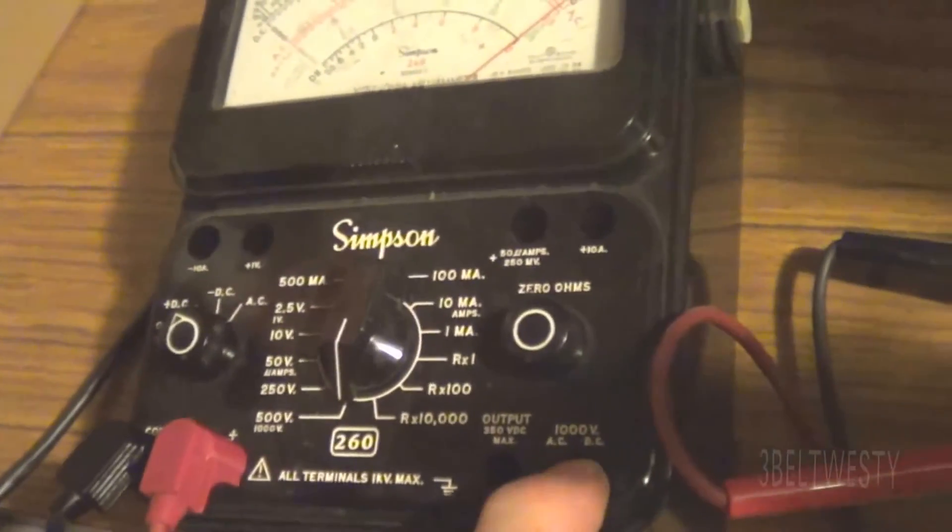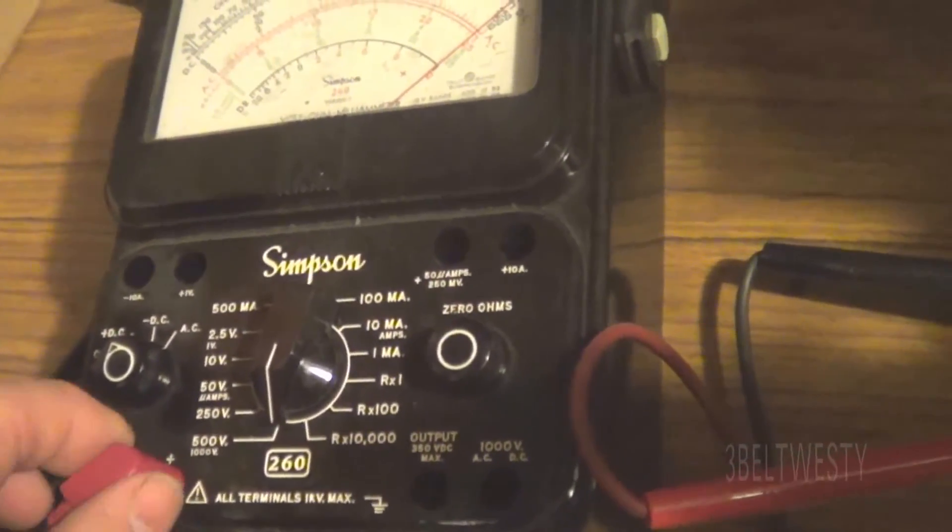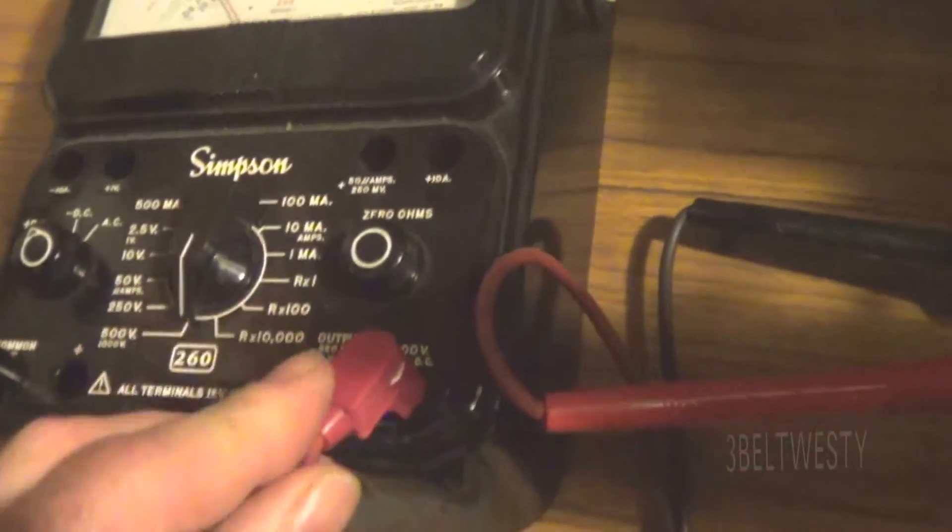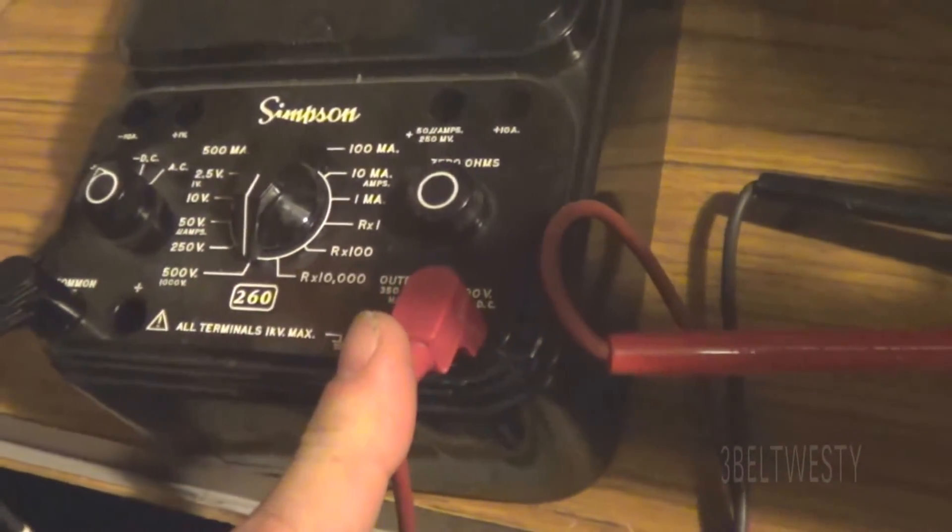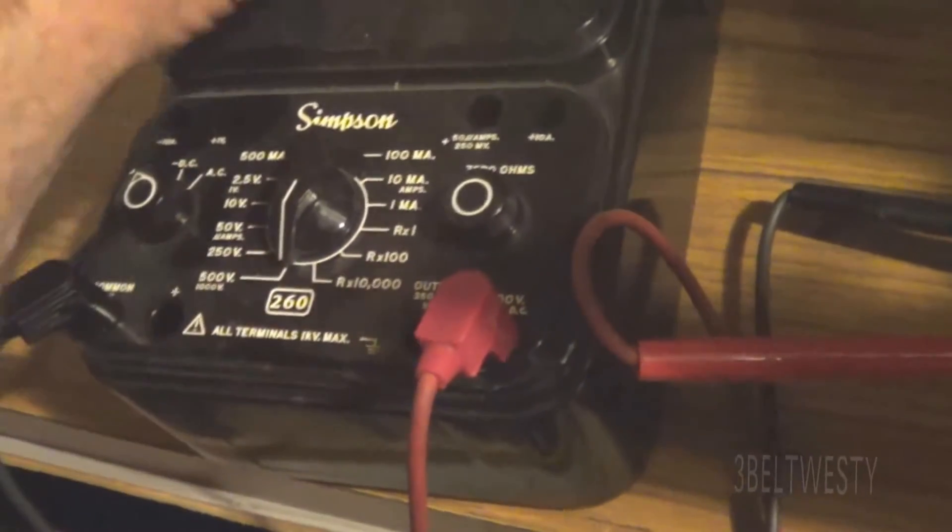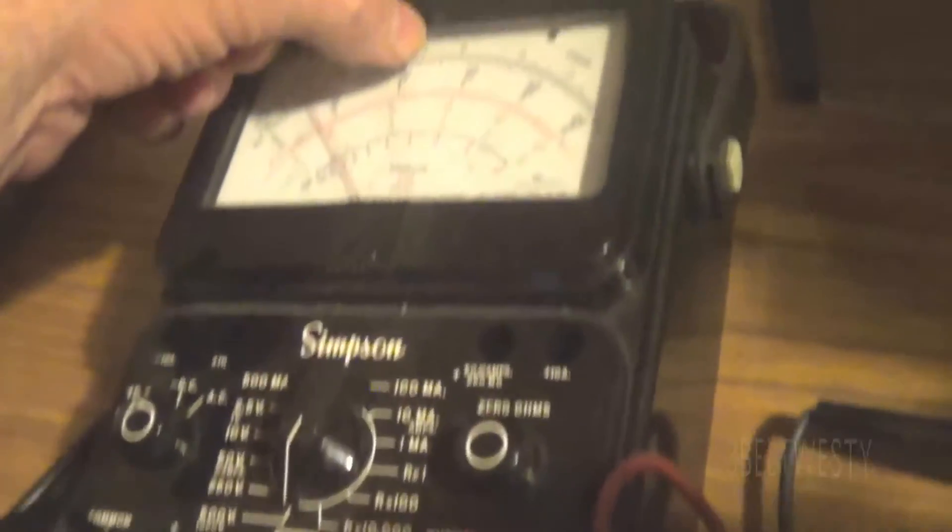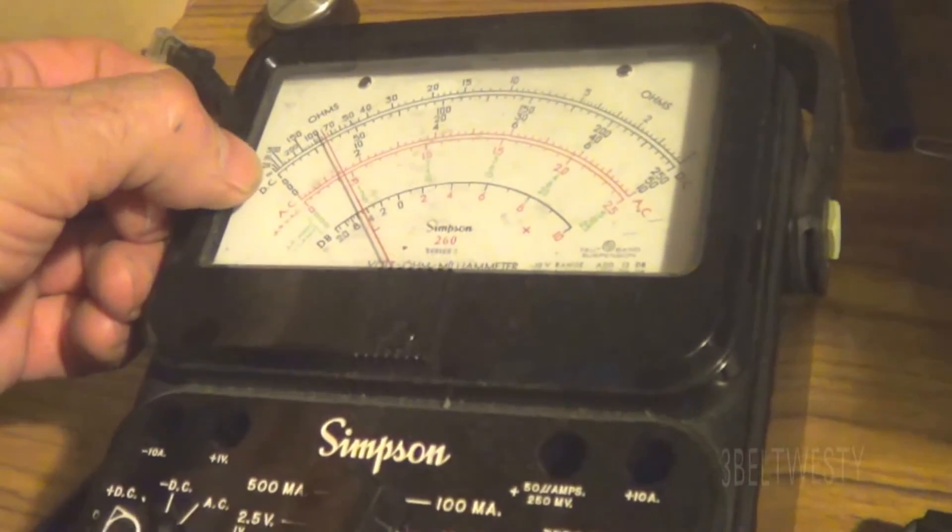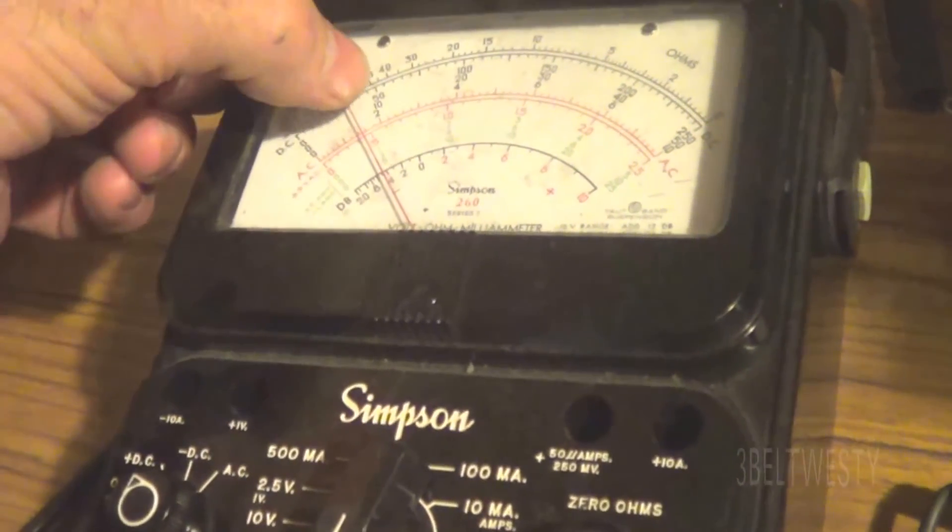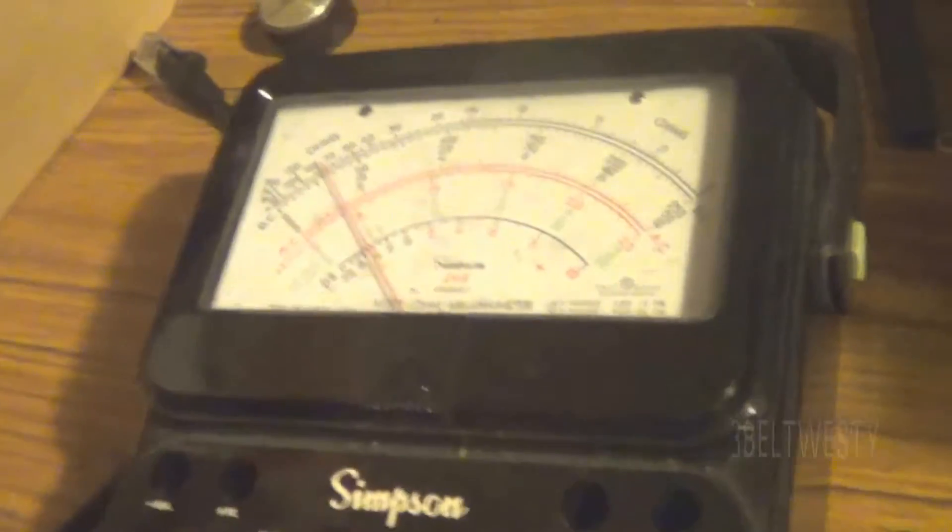There's 500, this is 487, so it's pretty good. Now the question is if I use this common and the 5,000 volt, take this off, plug into here, this should go to right here.